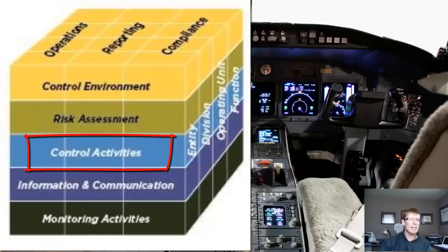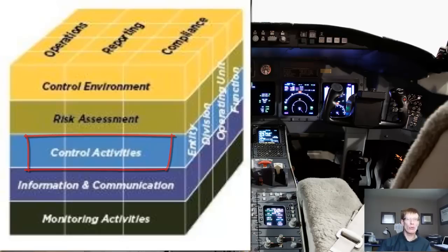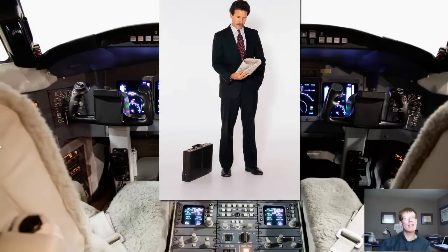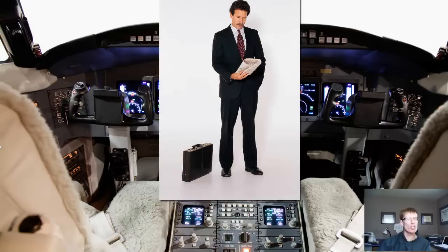Control activities can include manual, automated, and computer-assisted controls. For example, a computer-assisted control would be having a manager review an exception report generated by the system of outstanding and unmatched purchase orders — which, by the way, would be a control to address completeness and cut-off of accounts payable.